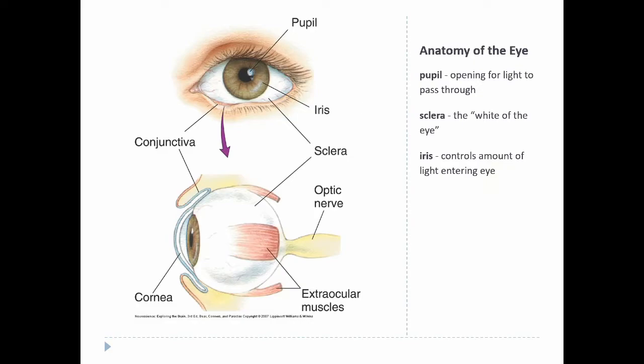One thing to note about the sclera: in humans it is white, but in most other animals it's actually black. It's still doing its job — absorbing light and preventing it from getting inside the eye — it just happens to be black instead of white. This is one interesting fact about humans that makes us different from most other animals.